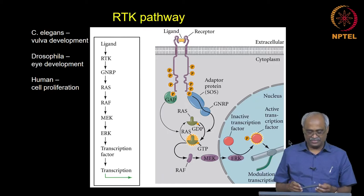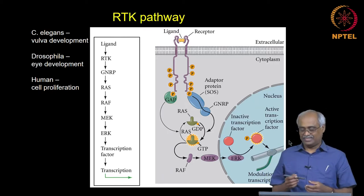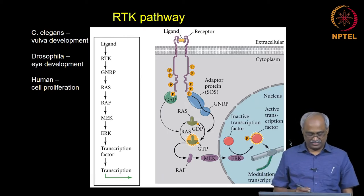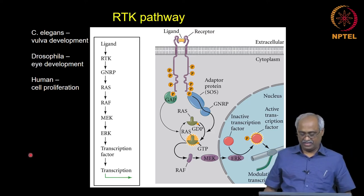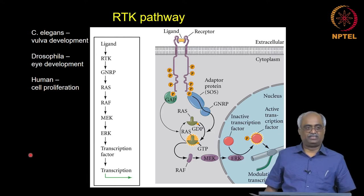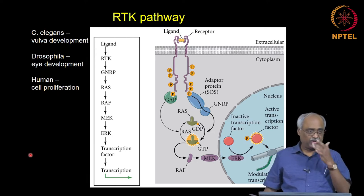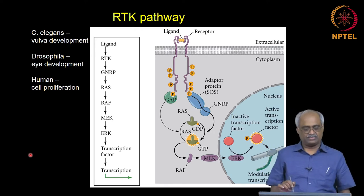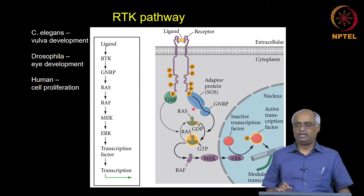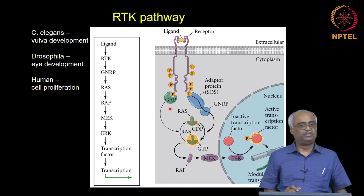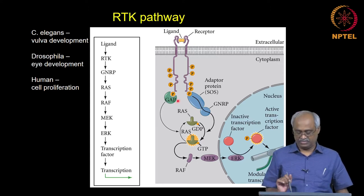Today we continue with cell signaling. In the last class we began with RTK, and we learned about how the RAS GDP-GTP exchange helps in fine-tuning the signal. Only as long as the signal comes will you have RAS-GTP; otherwise it automatically becomes RAS-GDP and inactive because of the actions of GAP and the intrinsic hydrolysis activity.